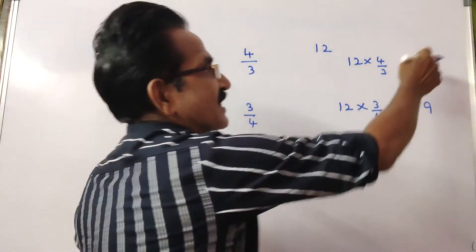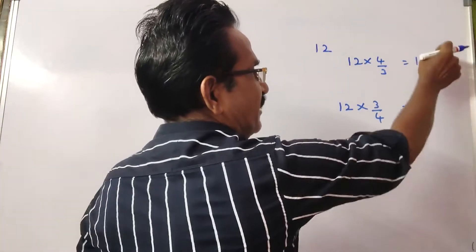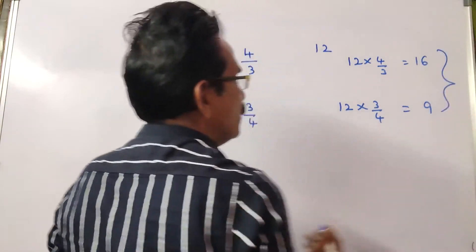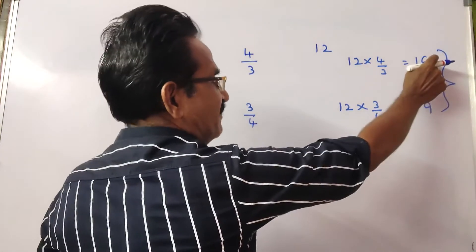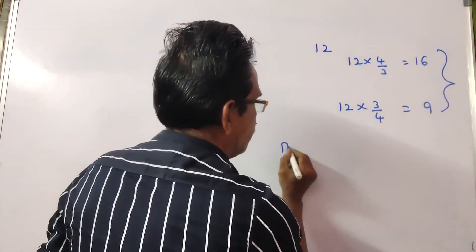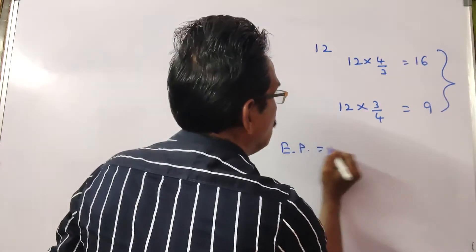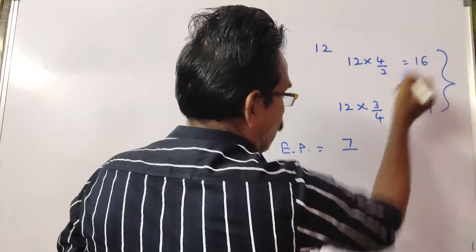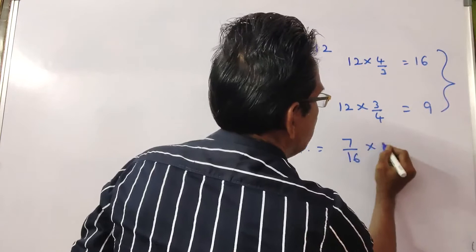What is the error? 7 is the error. So 7 less than the original answer. So error percentage is equal to 7 over 16 into 100.